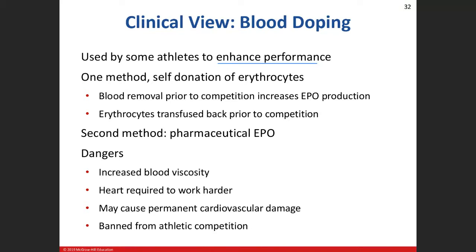Blood doping is done to enhance athletic performance. You remove blood weeks before competition. During that time, your body naturally produces erythropoietin and replaces those red blood cells. Then right before competition you transfuse your own blood back into your body, increasing your oxygen-carrying capacity — which helps aerobic performance like cycling. That's why Lance Armstrong and others got busted for it.